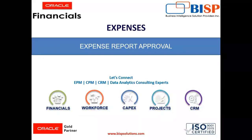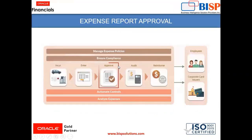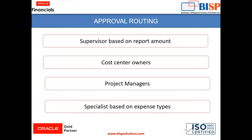Hello everyone, I am Harshita and today's topic is expense report approval in expenses. When expenses are incurred, an expense report is created and submitted for managerial approval. Approval can be done by a supervisor based on report amount, or by cost center owners, project managers, or specialists based on expense type. After their approval, the expense report moves further for auditing, and if auditing is not required, then for reimbursement.